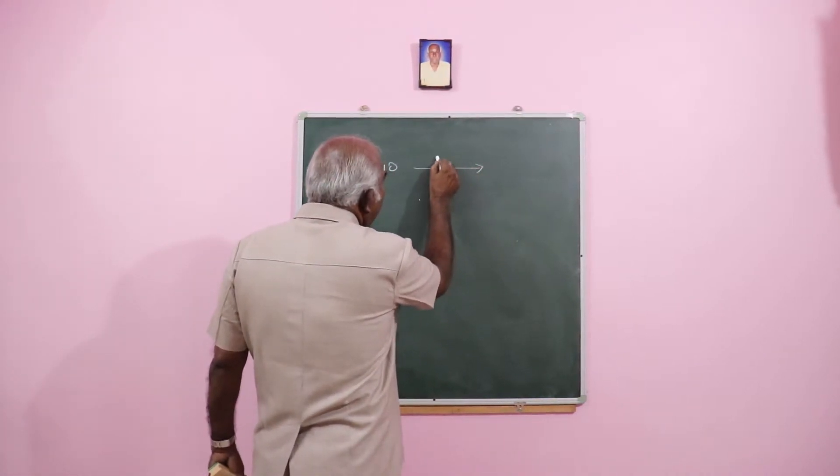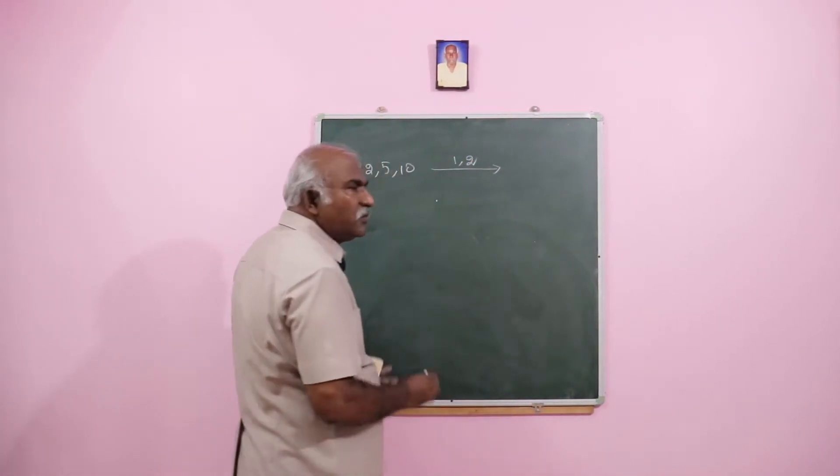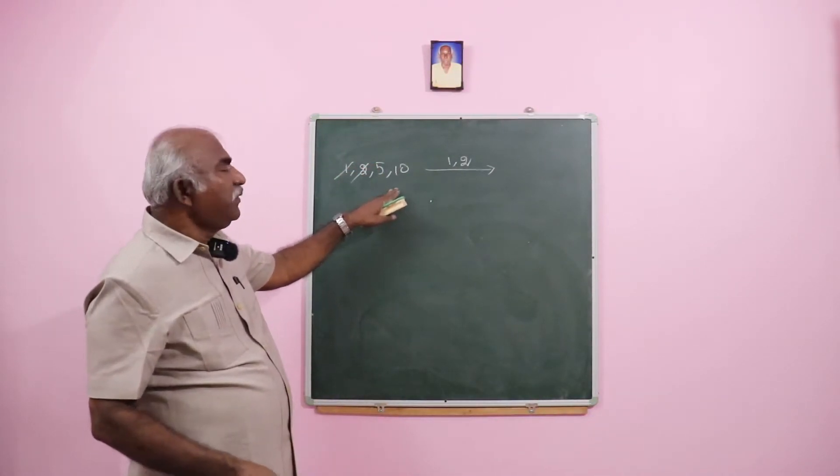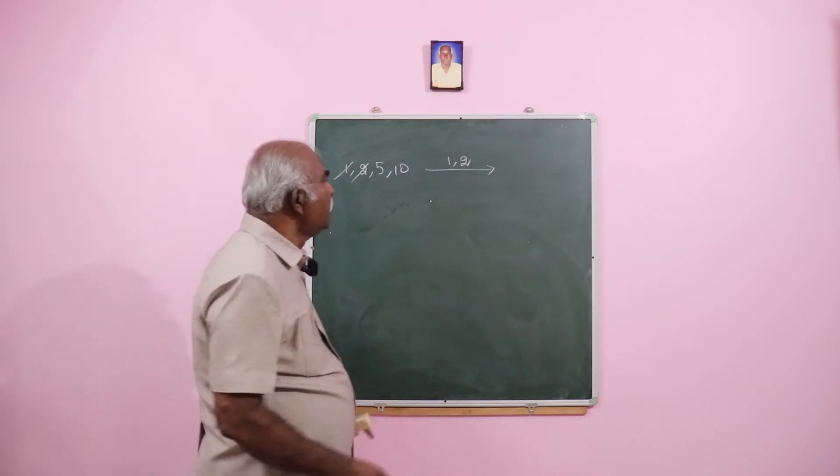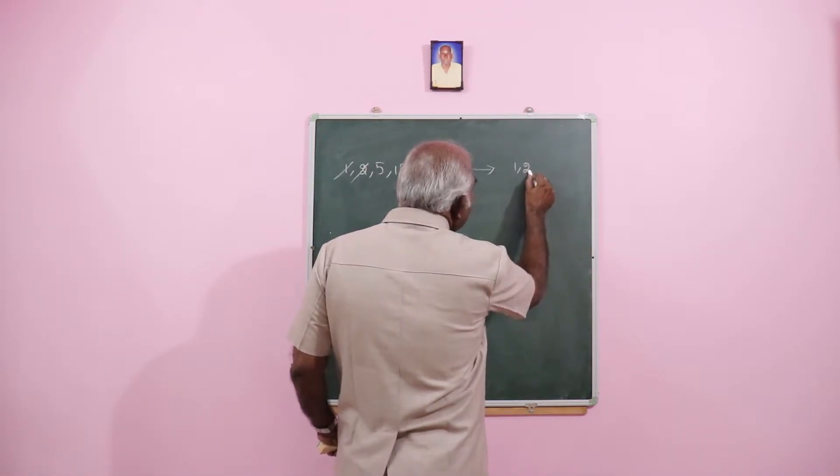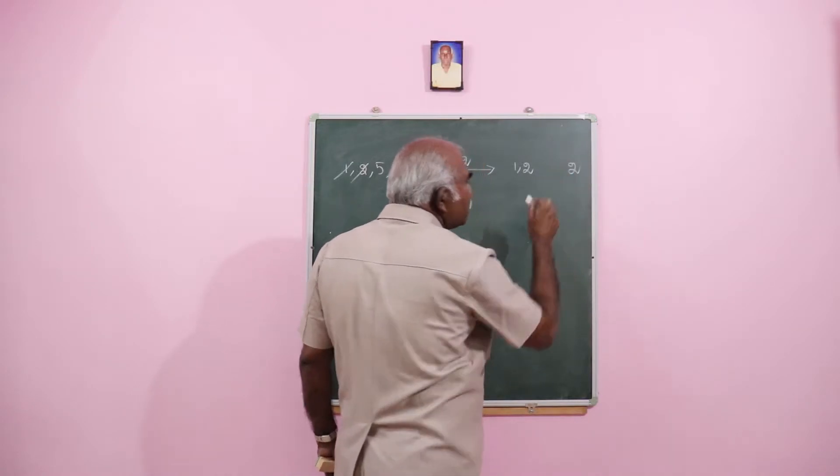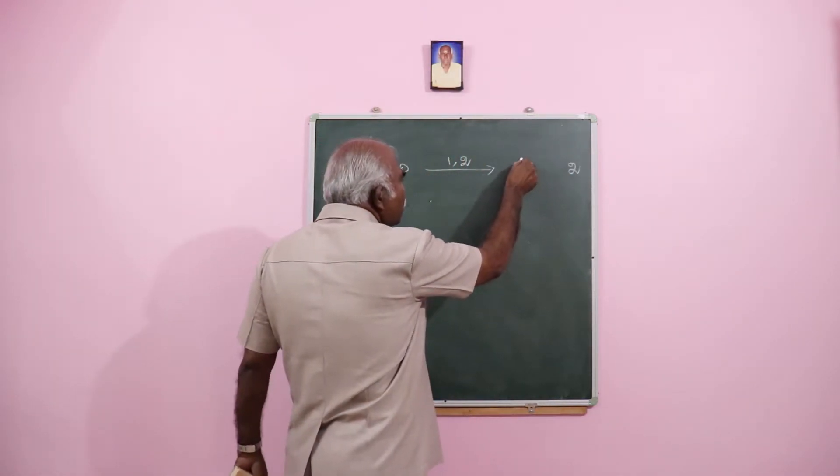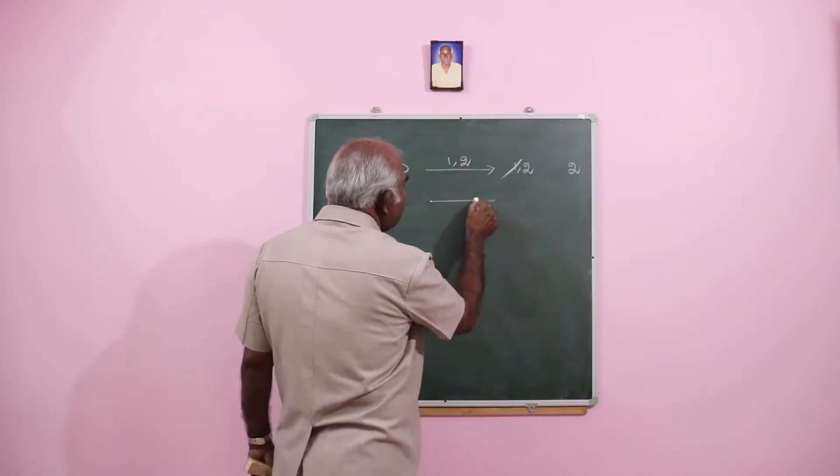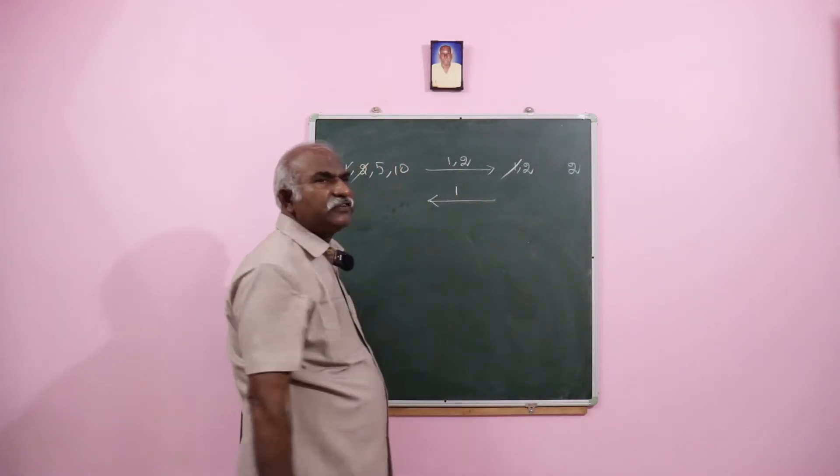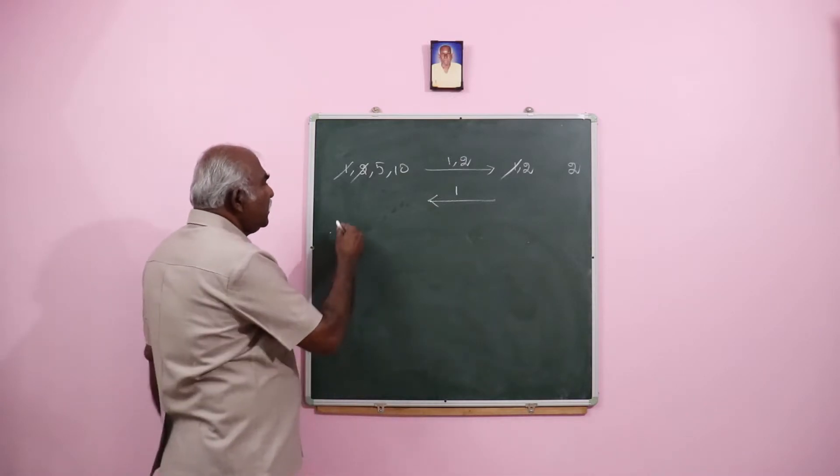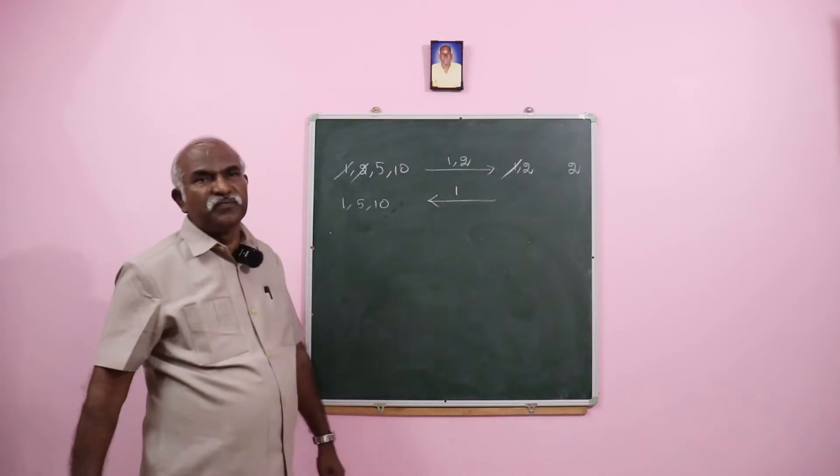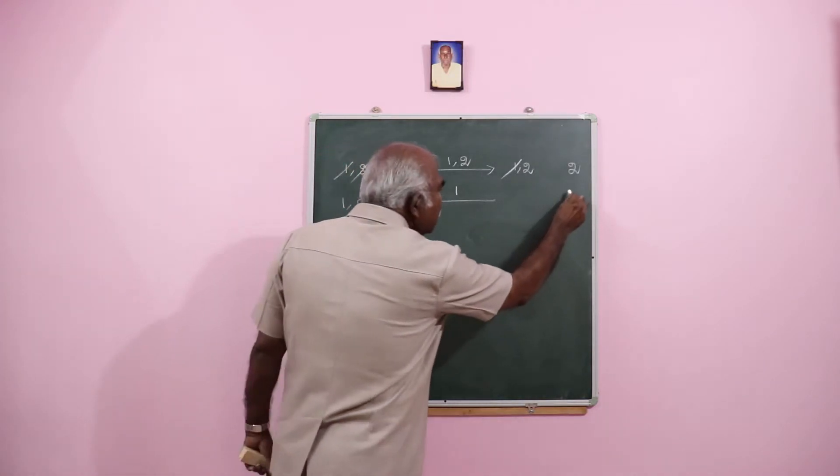Let us send 1 and 2 first. So they start moving. In the bank, 5 and 10 are remaining. 1 and 2 reach there. They take 2 minutes of time. Then 1 returns. Who all will be here? Now 1, 5 and 10 will be here. The time taken is 1 minute.